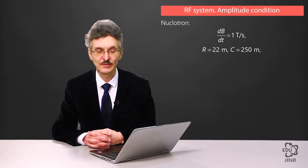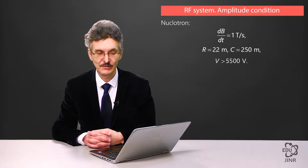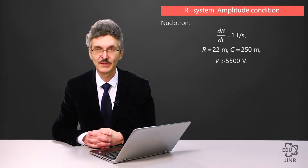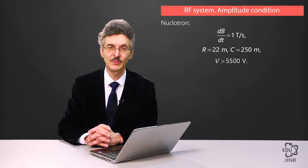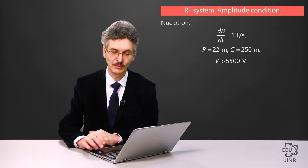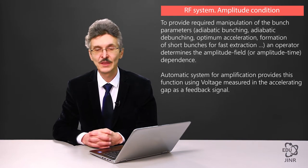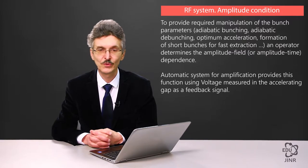From here, we derive that in order for a beam to be accelerated at the nucleotron, the voltage amplitude at the radiofrequency stations must be greater than 5.5 kilowatts. In fact, the magnitude used for the acceleration is considerably higher in order to provide maximum beam capture in the acceleration mode.